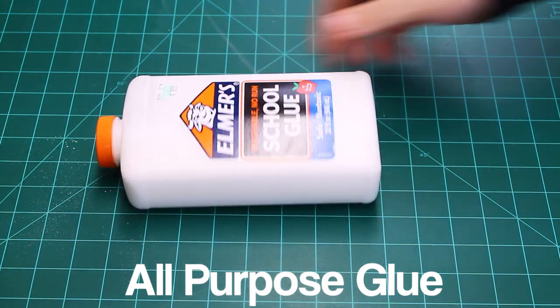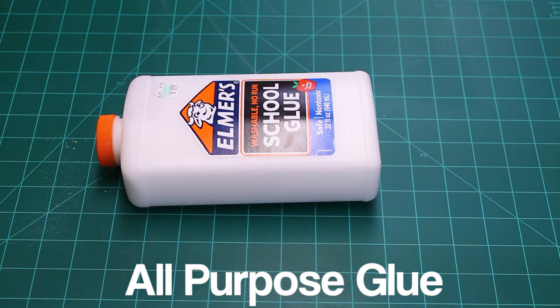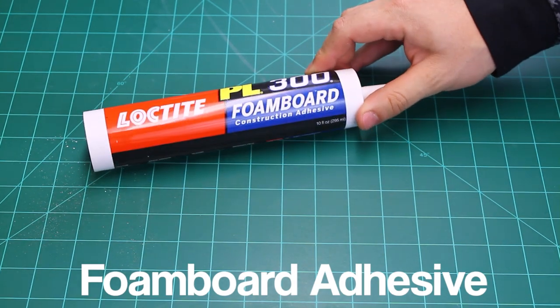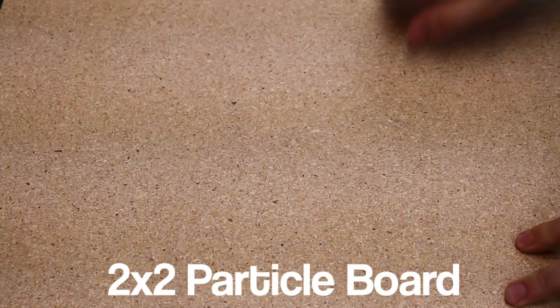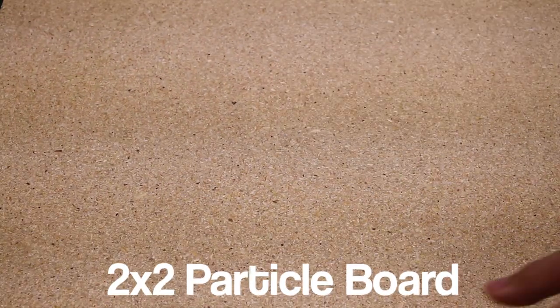And all-purpose glue, Elmer's, to the rescue, it's the best stuff ever. Also, I'm using a foam board adhesive to actually adhere the stuff to the base this time. And the base that we're using is a 2x2 particle board. It's only about one inch or half an inch thick.